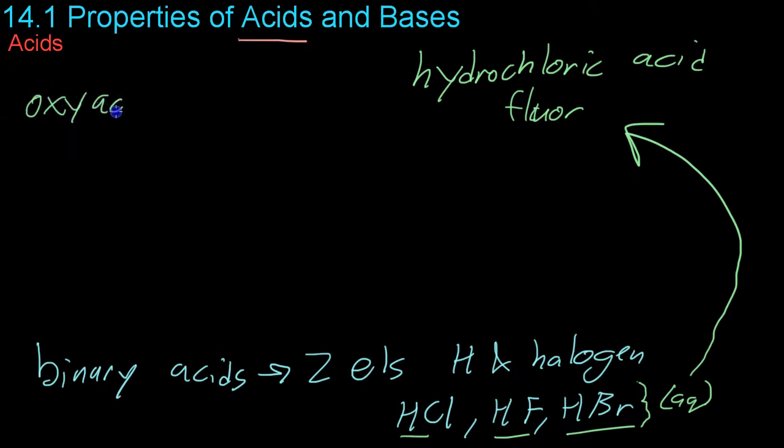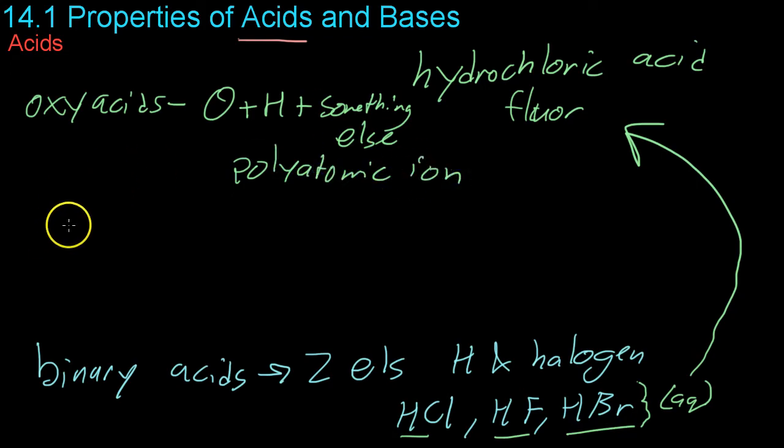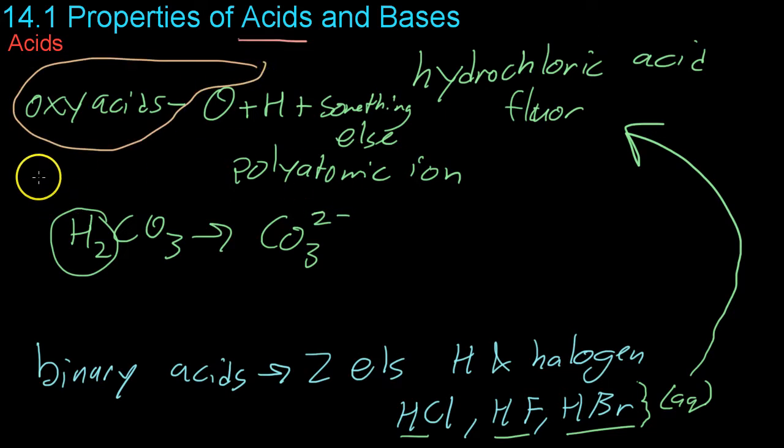Next we have what are known as oxy acids and these have oxygen, hydrogen, and something else as well. Usually the oxygen and the something else are part of a polyatomic ion. For example carbonic acid H2CO3 is a combination of hydrogen and the ion carbonate. If you want a really comprehensive list of all the various types of oxy acids you can get, if you look on page 469 there's a great list down at the bottom under table two.